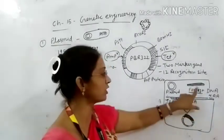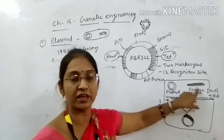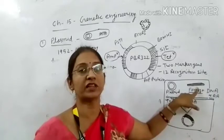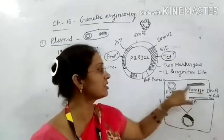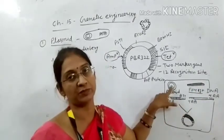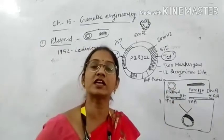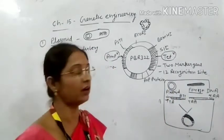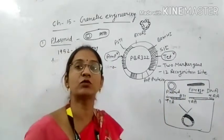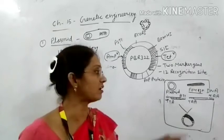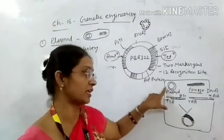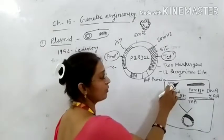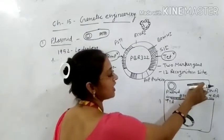Suppose we have a foreign DNA which contains our desired gene. We need to insert this desired gene into the plasmid so we can get a duplicate copy through replication. To do this, we have to cut both the plasmid and the foreign DNA using a restriction enzyme. We use the restriction enzyme to cut these DNA molecules.